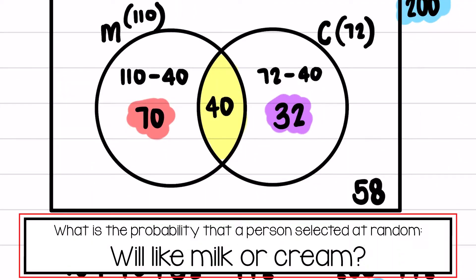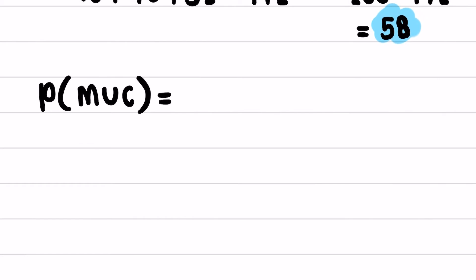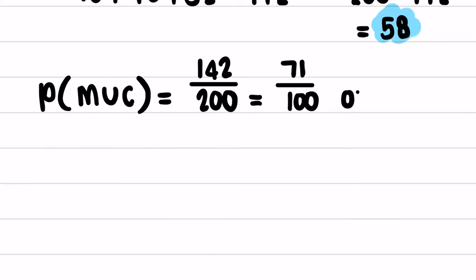The question asks: what is the probability that a person chosen at random will like milk or cream? 'Or' refers to what's within the circles. So the probability of milk or cream equals 142 out of 200, which simplifies to 71 over 100, or 71 percent.